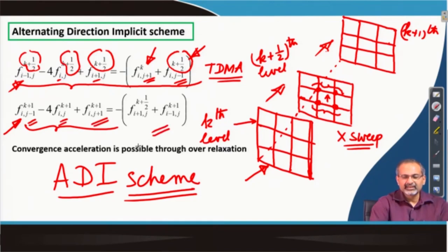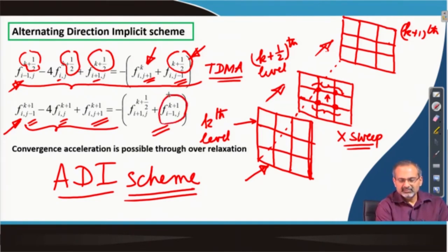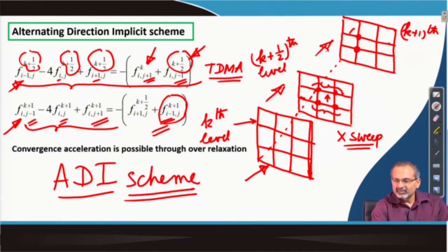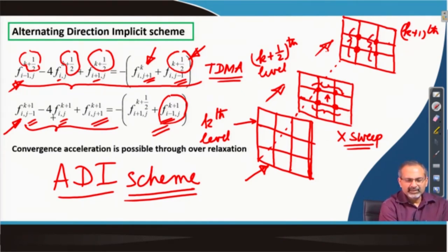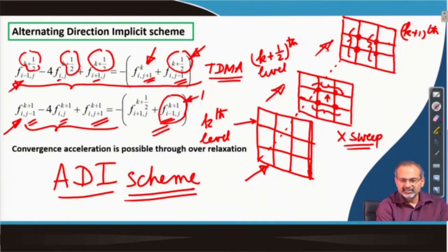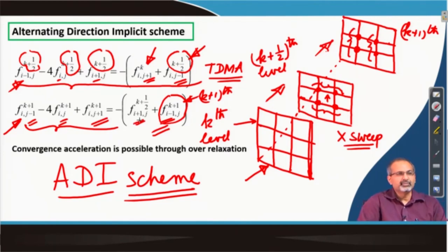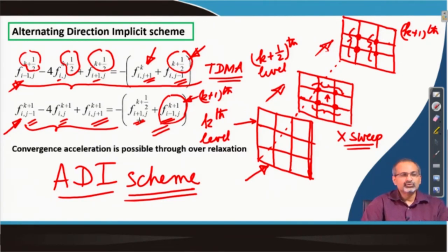What you have on the right-hand side are values which have reached at least the k+1/2 level or even the k+1 level. The k+1 level has been reached by the i-1,j grid point because you are sweeping column-wise. By the time you reached the i column, you have already swept through column i-1 and therefore that has already reached the k+1 level. You are yet to reach column i+1, which lies to your right if you are sweeping from left to right, and therefore it remains at the k+1/2 level completed through the x sweeps.